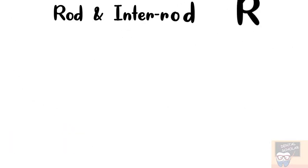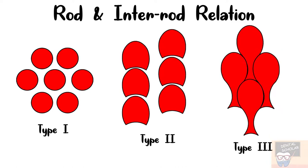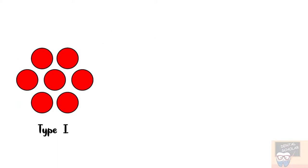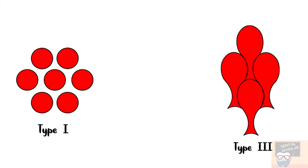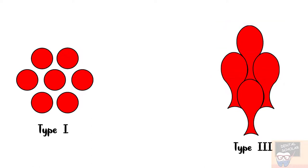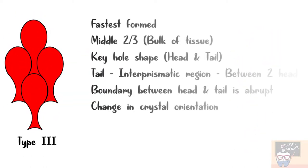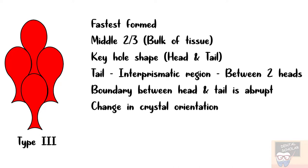There are three different types of rod and inter-rod relationship patterns: Type 1, Type 2, and Type 3. In human enamel, all three patterns are seen. Type 3 is the most common and Type 2 is the rarest. Type 1 and Type 3 have a similar gross arrangement, but in pattern 3, the inter-prismatic material of one row constitutes the tail of the prisms in the row above, showing a typical keyhole pattern. Type 1 is the slowest formed and is found at the DEJ and surface. Type 3 is the fastest formed and is found in the middle two-thirds of the enamel thickness.